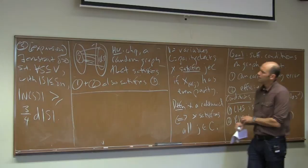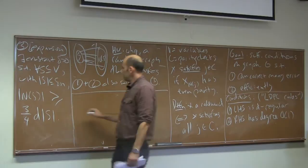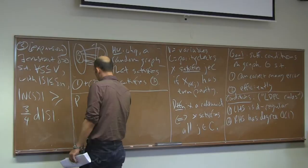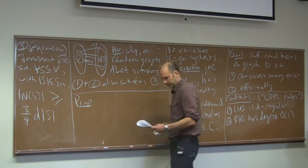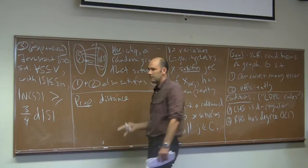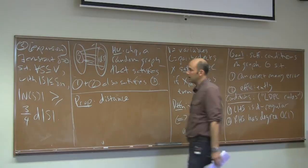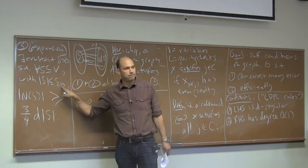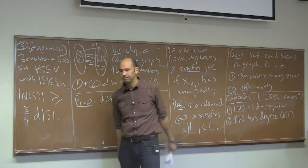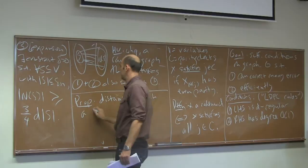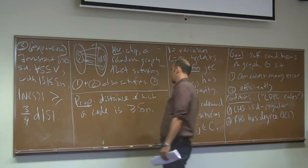Given a graph like this, we get a corresponding LDPC code. I want to develop the idea that these codes are good in various senses. The first thing I want to prove is that the minimum distance between any two code words is in fact linear in N — specifically, at least δN where δ is the expansion parameter.